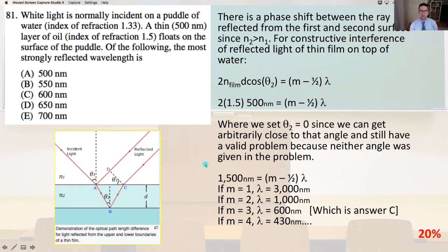Of the following, the most strongly reflected wavelength is... There is a phase shift between the ray reflected from the first and second surface since N2 is greater than N1. For constructive interference of reflected light of the thin film on top of water, we have 2n times d times cosine theta 2 equals m minus 1.5 times lambda.